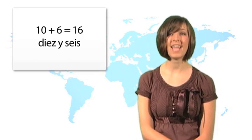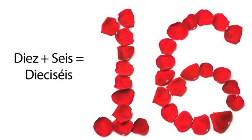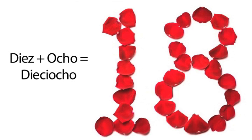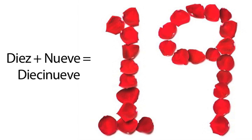You should really practice the numbers 0 through 15 since they have such unique pronunciation, but starting with 16, all you have to do is combine the numbers you already know, diez y seis, into one word: dieciséis. And the same goes for 17 through 19: diecisiete, dieciocho, diecinueve.